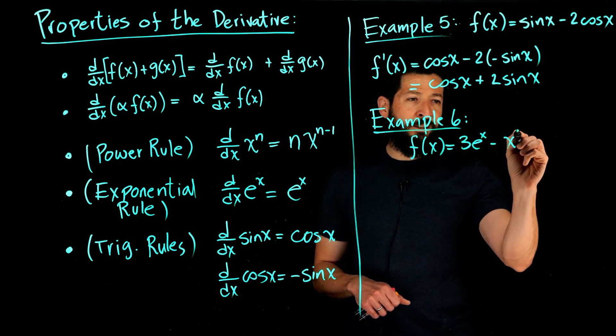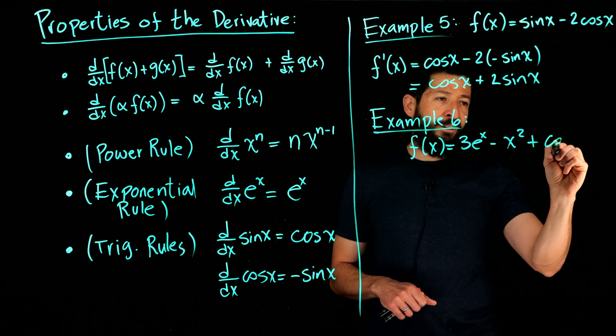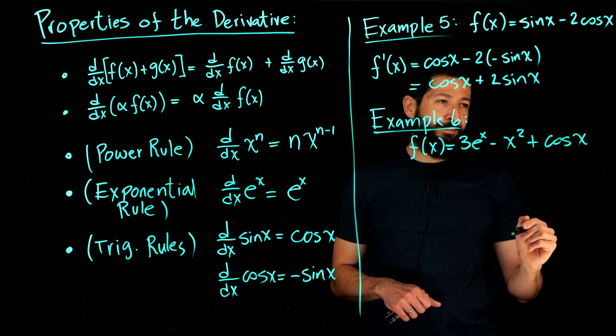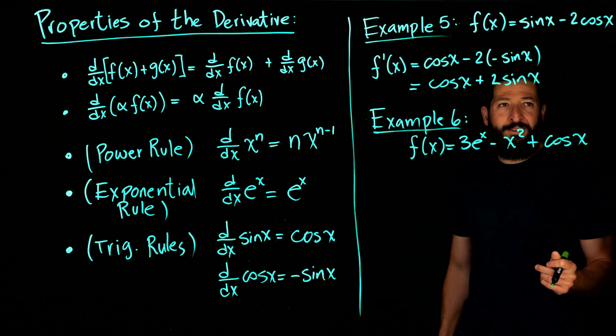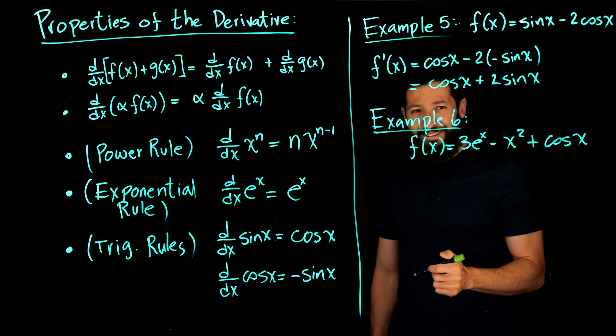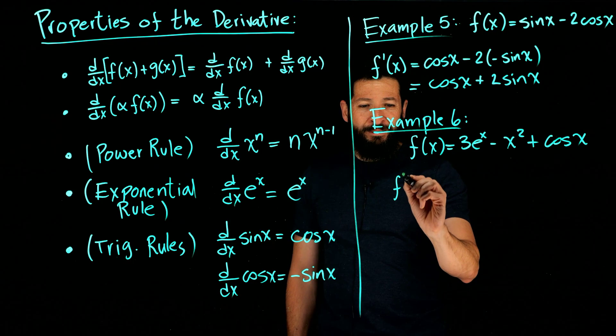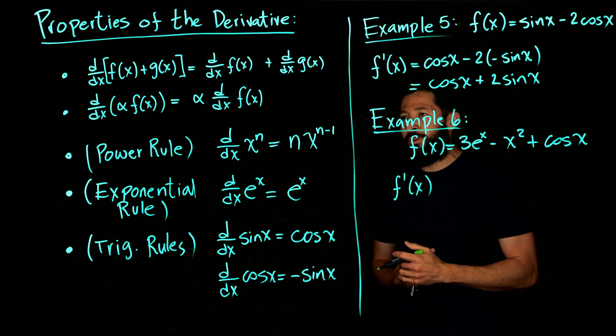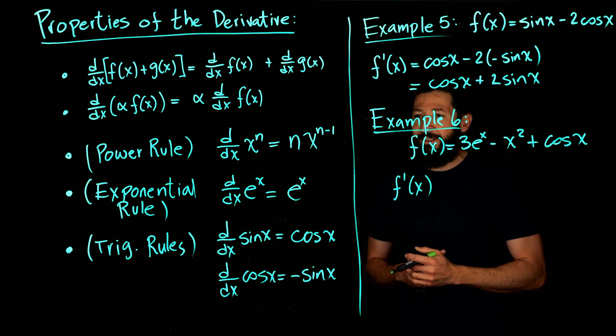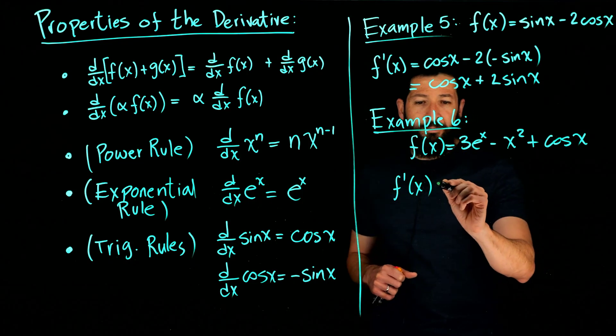Where f is something like 3 times e to the x minus x squared plus cosine x. Yeah, that's good enough. So a function that you will never see in real life, but you know, there it is. So let's try to compute the derivative of that to practice all of the rules that we had, putting them together.